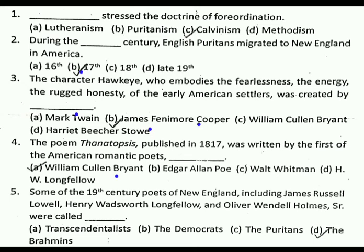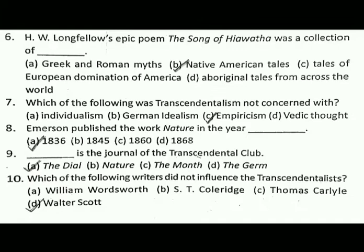Question number five: some of the 19th century poets of New England, including James Russell Lowell, Henry Wadsworth Longfellow, and Oliver Wendell Holmes Sr., were called dash. The correct answer is D, that is the Brahmins.